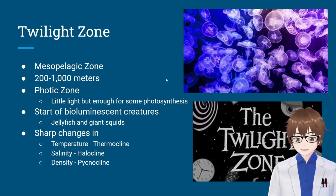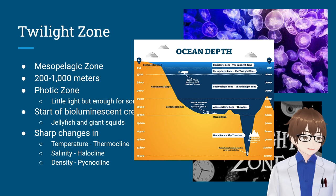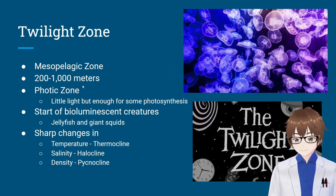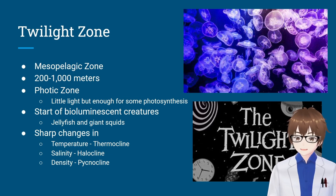Now we're going deeper down. The deeper we go, the more interesting organisms we find because they have to figure out certain ways to survive. We are now in the twilight zone — about 200 to 1,000 meters down, right below the sunlight zone. The mesopelagic zone is technically still in the photic zone at the 200-meter mark, but this is where all the light gets absorbed. Little light remains, but enough for some photosynthesis. Here you will start to see bioluminescent creatures — jellyfish and giant squids. I think these are moon jellies — really beautiful jellyfish that just light up.